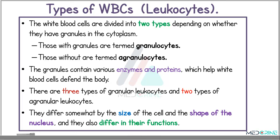White blood cells are divided into two types depending on whether they have granules in the cytoplasm or not. Those which have granules are known as granulocytes, and those without granules are known as agranulocytes. The granules contain various enzymes and proteins which help the white blood cells defend the body. There are three types of granular leukocytes and two types of agranular leukocytes, which differ by cell size, nucleus shape, and function.